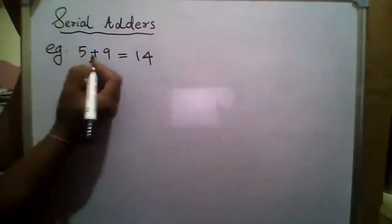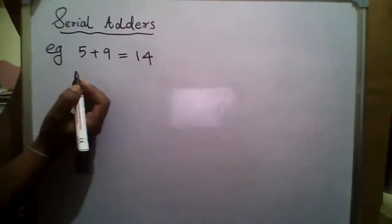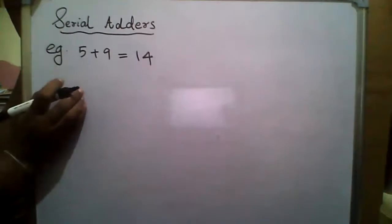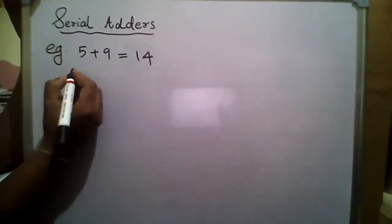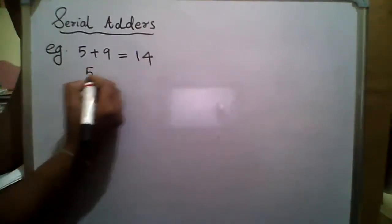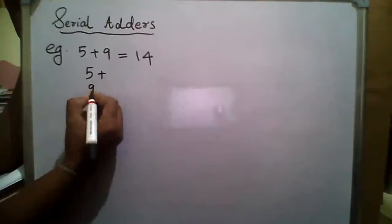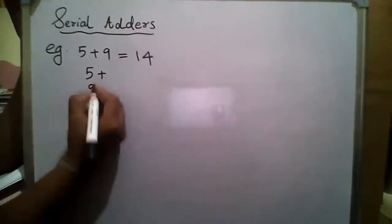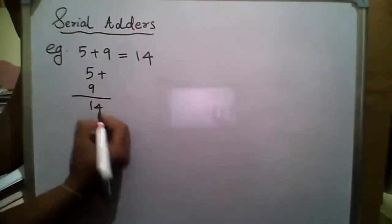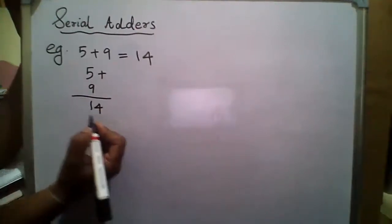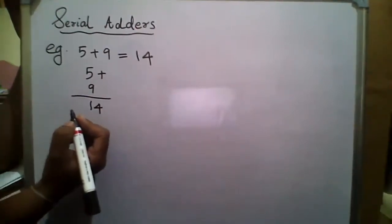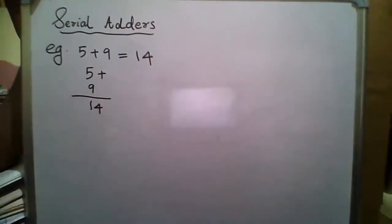I will consider an example here. What is a Serial Adder? What is a Parallel Adder? Let's take 5 plus 9. 5 plus 9 equals 14. This is the equivalent binary representation. So the equivalent binary addition is represented in binary form.